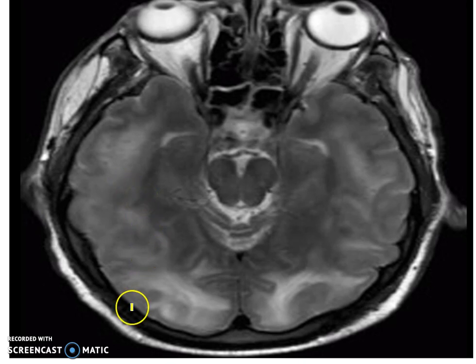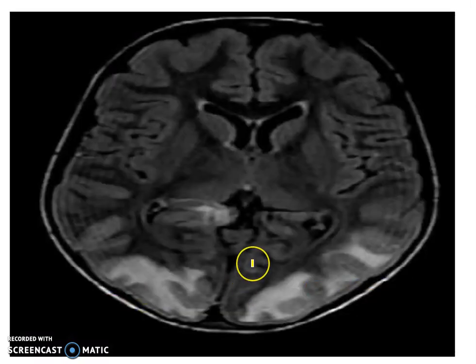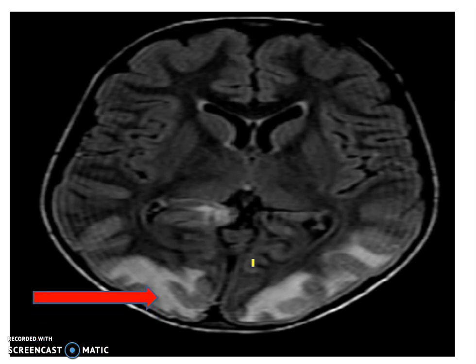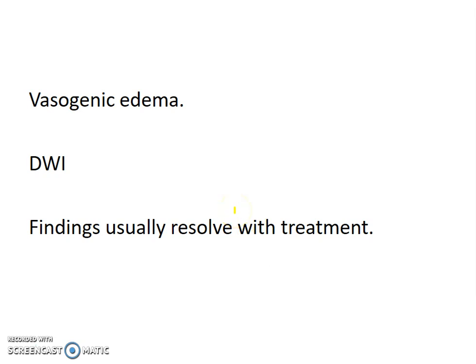This MRI shows hyperintensities in the posterior region. The gray matter is more affected than white matter because the fibers are densely packed. The typical finding of PRES on MRI depicts vasogenic edema. Diffusion-weighted imaging is important because it helps differentiate PRES from stroke — although bilaterally symmetrical edema not restricted to a single vascular territory is typical, some cases may be difficult to differentiate on T2-weighted MRI alone. The findings usually resolve with treatment, so follow-up imaging may be required.